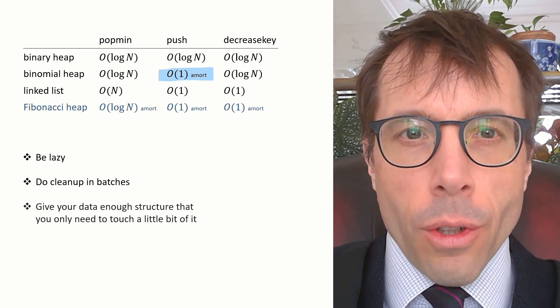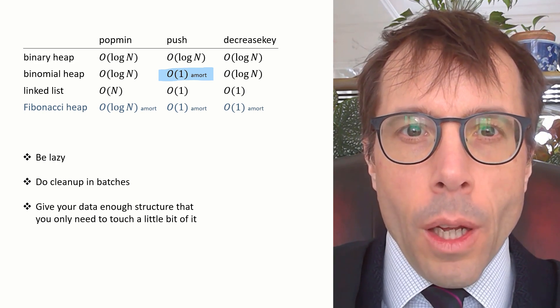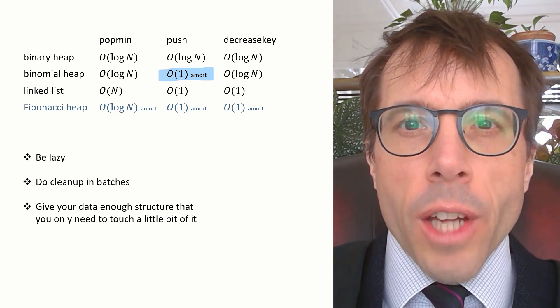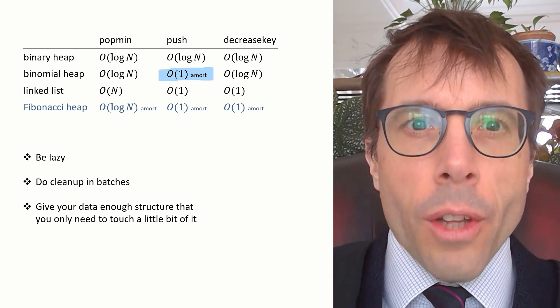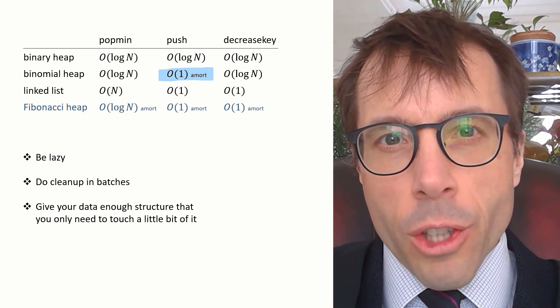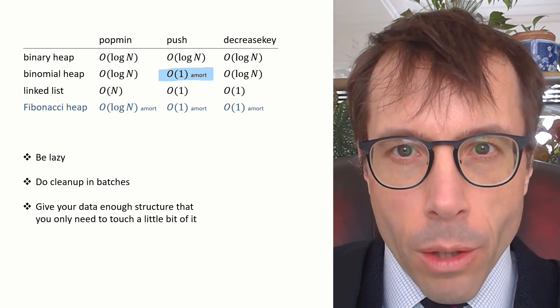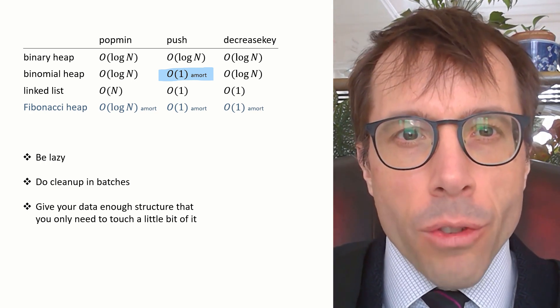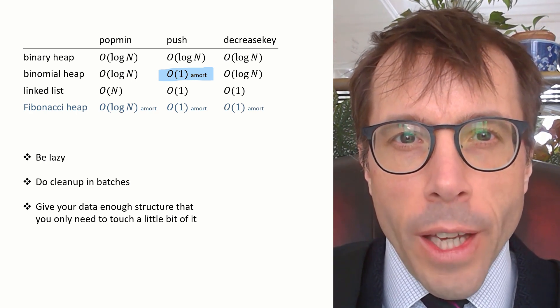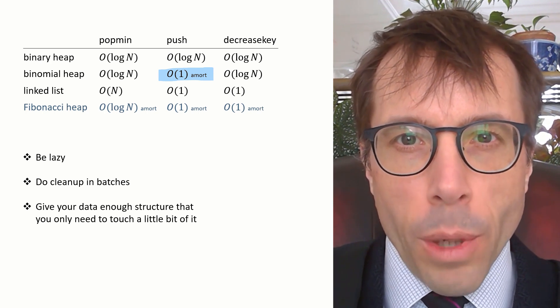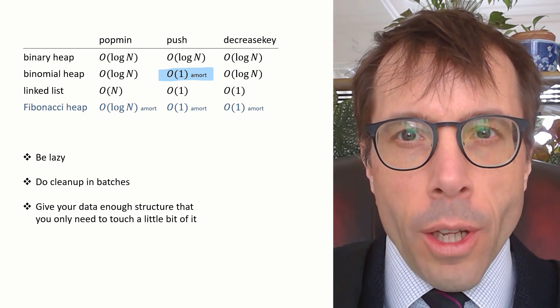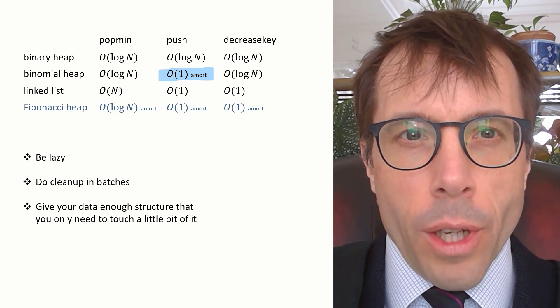The third lesson is the most subtle. In the binomial heap, we kept the data in a nice binomial structure, something that looks a little bit like binary digits. And pushing a new item was like adding one in binary. And this meant that most of the pushes that we made only had to touch a very small part of the data structure. And this let them be O(1) amortized.